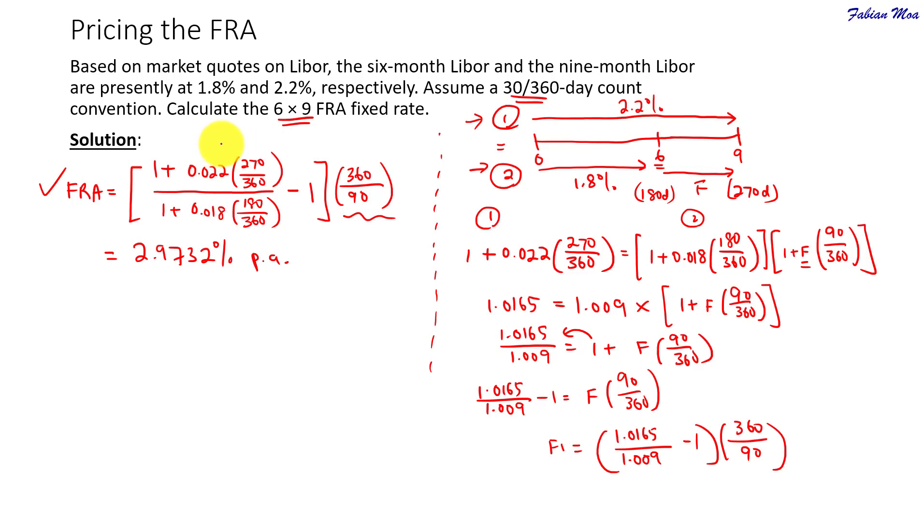What I normally advise students to do is remember that the numerator has to be for the longer rate. Okay, and then the denominator will contain the shorter rate. Okay, the shorter as in from 0 up to 6 months. That's when the FRA will expire. Okay, and remember always remember to annualize the FRA rate.